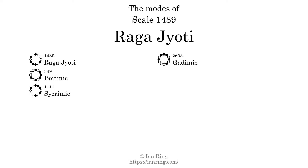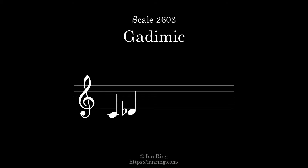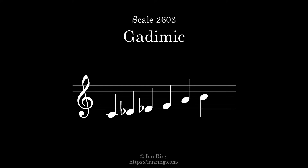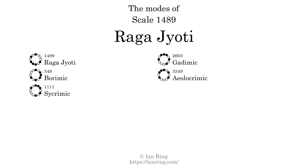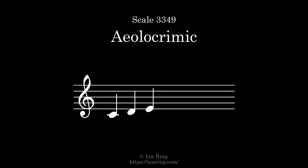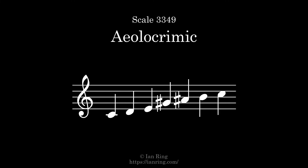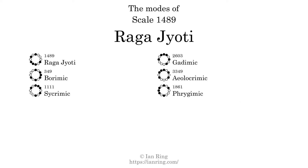The fourth mode is scale 3349, also known as krimic. It sounds like this. The fifth mode is scale 3349, also known as krimic. It sounds like this. The sixth and last mode is scale 1861, also known as krimic. It sounds like this.